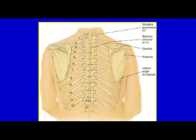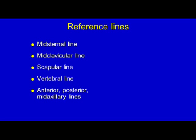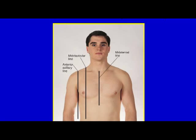Posterior landmarks include the vertebrae, especially C7, which has a spiny process you can count down. You can also see the scapulae and the 12th rib, though that can be hard to count. We also have reference lines used in documentation — see page 413 in Jarvis.